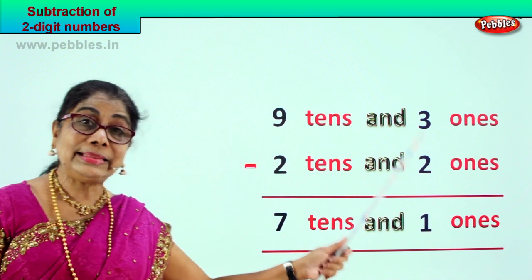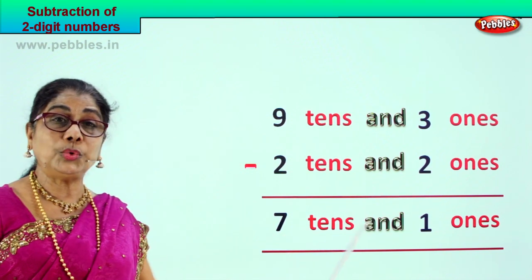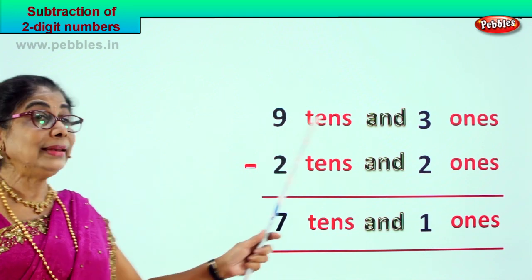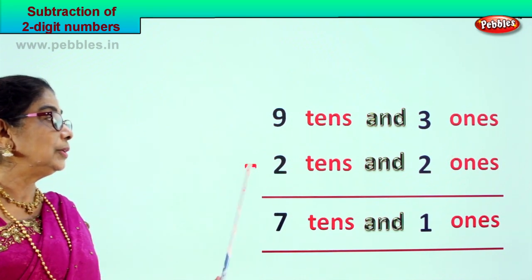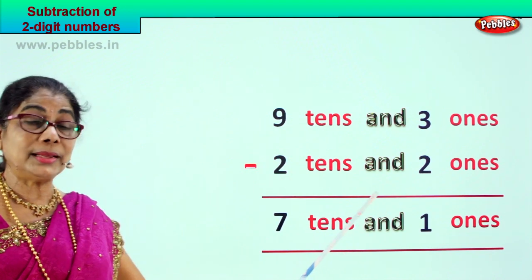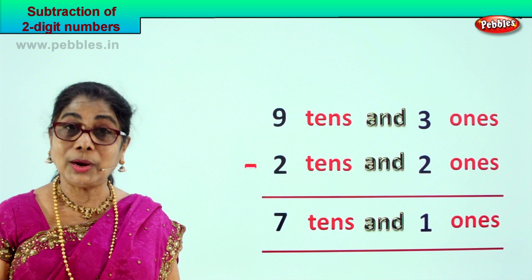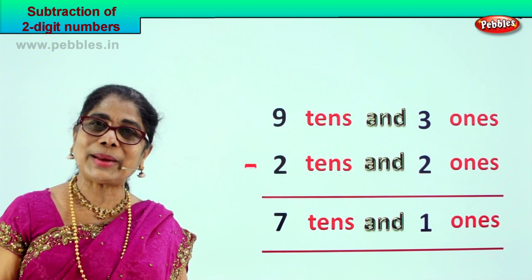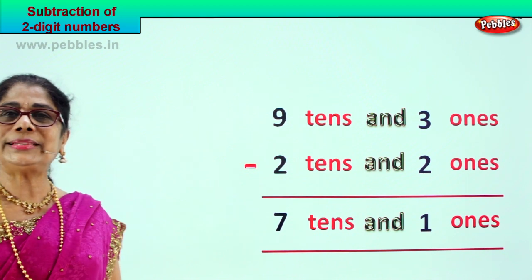93 take away 22 is 71. That is 9 tens and 3 ones minus 2 tens and 2 ones — your answer is 7 tens and 1 one. Did you enjoy 2 digit subtraction? Good, let's go to another sum.